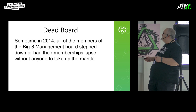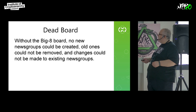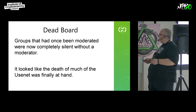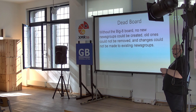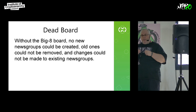In 2014, most of the previous members of the Big Eight management board had stepped down or had their memberships lapse, and they didn't have anybody take up the reins, so they just kind of let it go. Without them, no new groups could be created, none could be removed, and nothing could be changed to existing groups. The way they authenticated is through something called a control message — a control message is signed with a GPG key, and as long as the different servers recognize that GPG key, that's how they authenticated. Only the members had access to the private key.